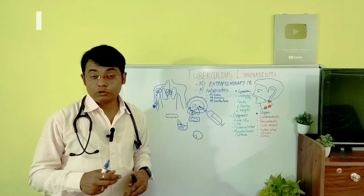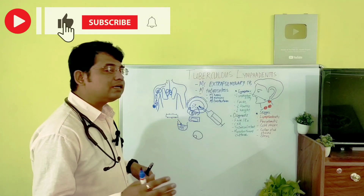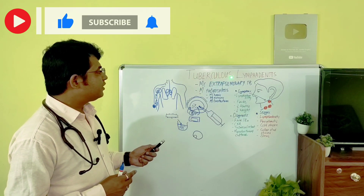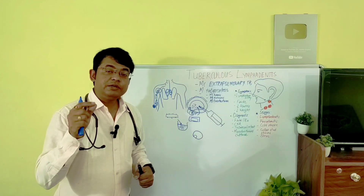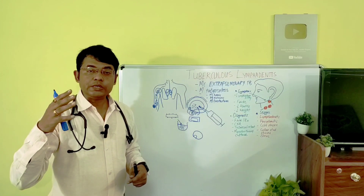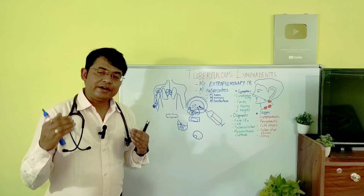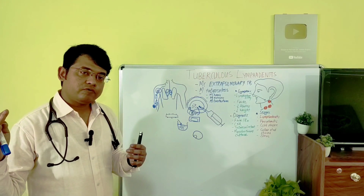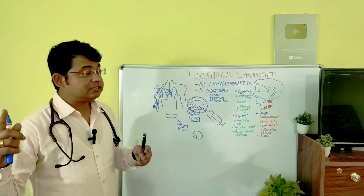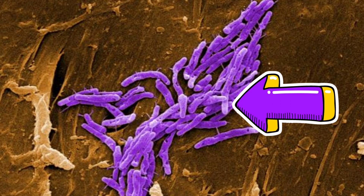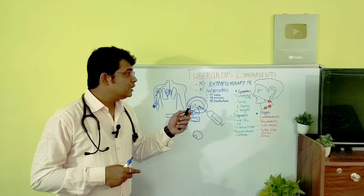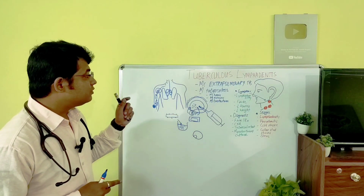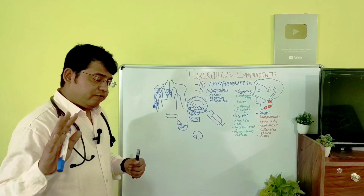Hello and welcome to another blog. I'm Dr. Joy and welcome to my YouTube channel. Today's topic is tuberculosis lymphadenitis, that means TB of the lymph node. As we know, lymphadenitis can be caused by a lot of infectious organisms, and TB is one of them. So if there is an infection of the lymph node by tuberculosis, it is known as tuberculosis lymphadenitis.